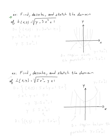Let's move on to the next example: find, describe, and sketch the domain of h(x,y) = √(y - 3x² + 1). Again, we have a radical, so the domain will be all points (x, y) such that whatever is under the radical is greater than or equal to zero. So y - 3x² + 1 ≥ 0, which means y ≥ 3x² - 1.